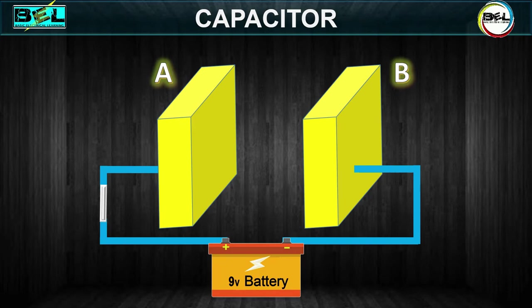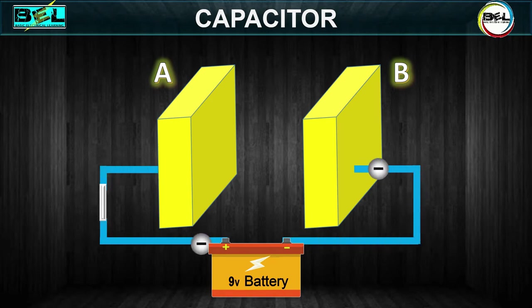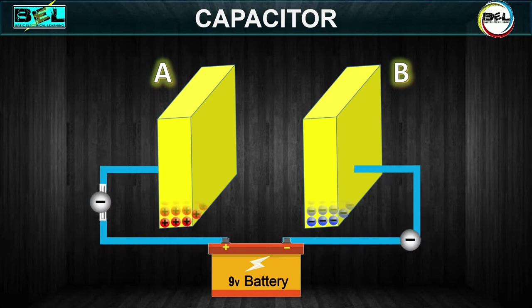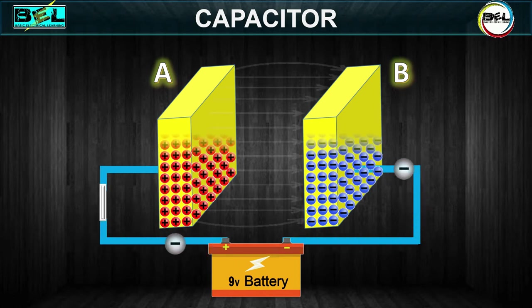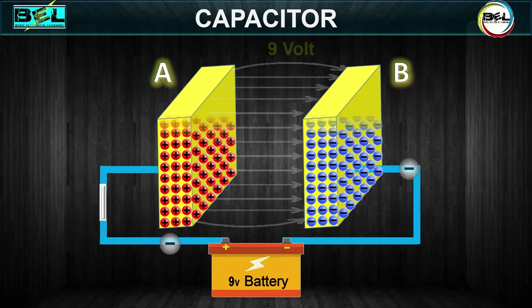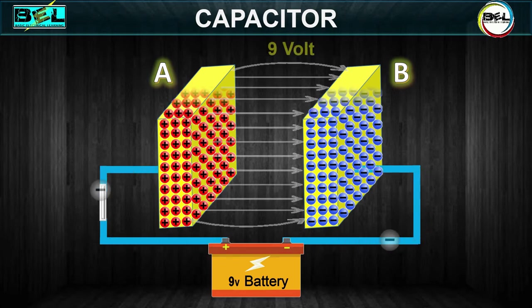Current flows in the external circuit during the time the electrons are moving from A to B. The current flow in the circuit is at a maximum the instant the switch is closed, but continually decreases thereafter until it reaches zero — as soon as the difference in voltage of A and B becomes the same as the voltage of the battery, that is 9 volts.